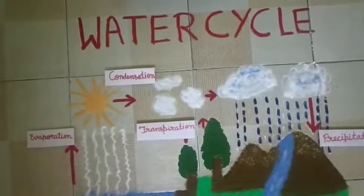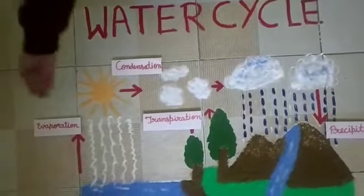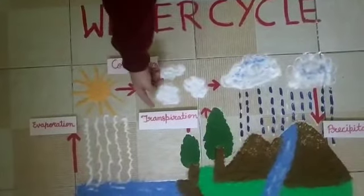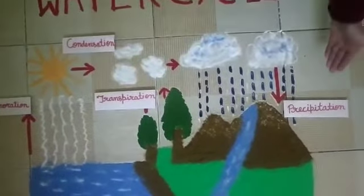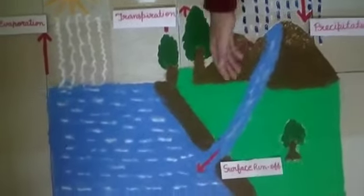The circulation of water from the earth to the atmosphere and back to the earth is called the water cycle. The water cycle consists of five processes: evaporation, transpiration, condensation, precipitation, and surface runoff.